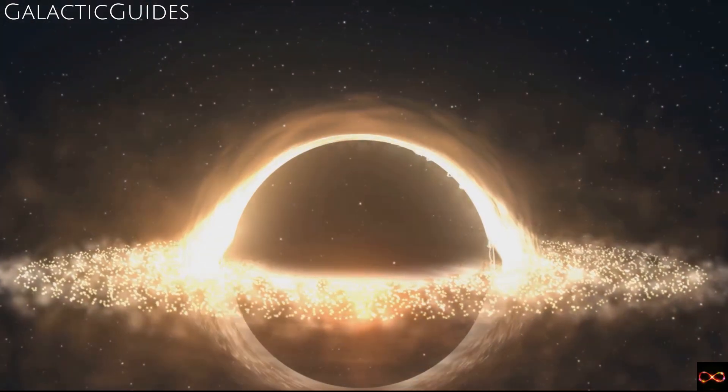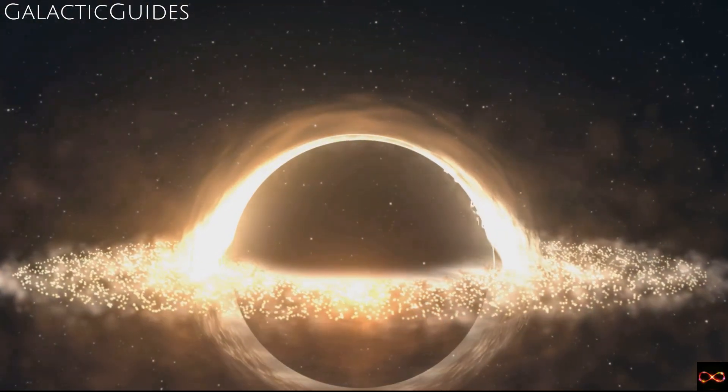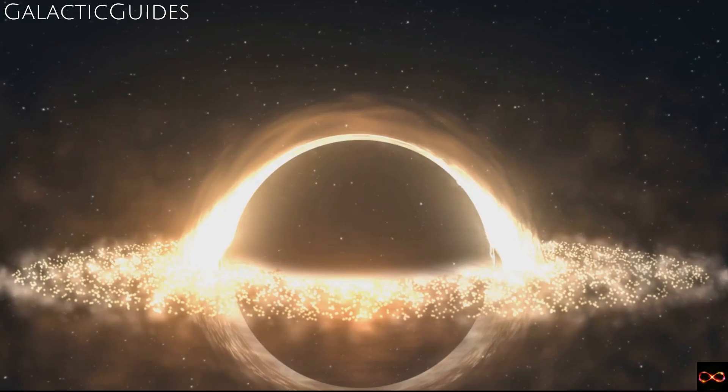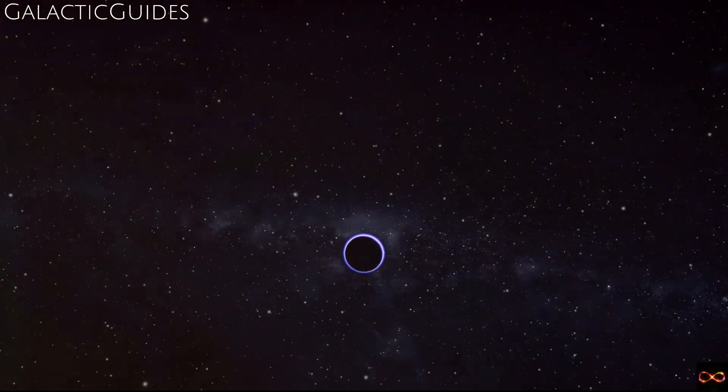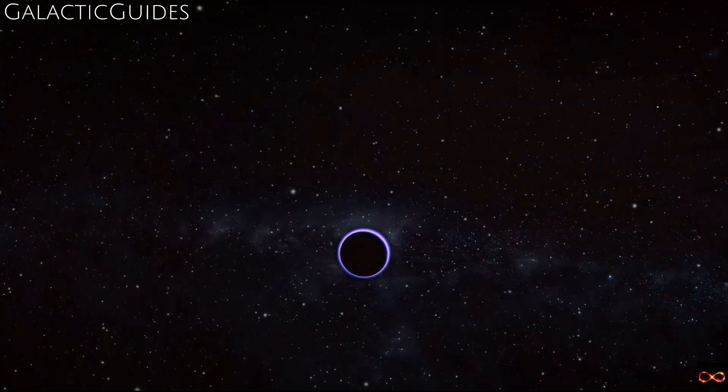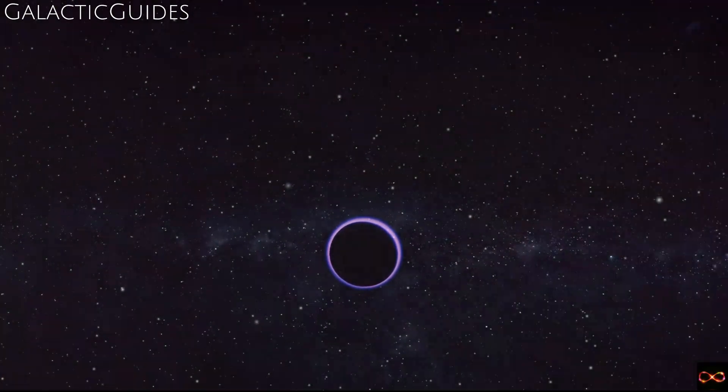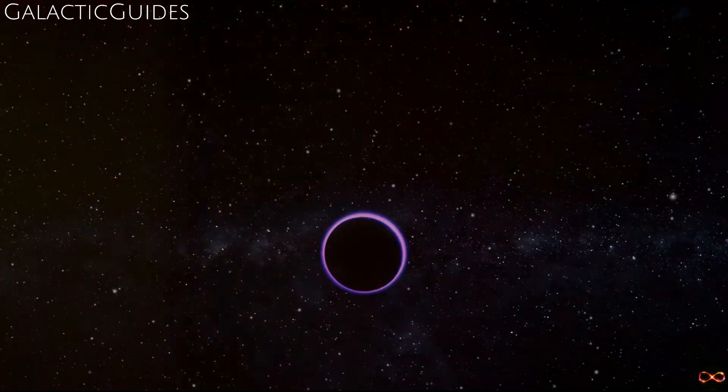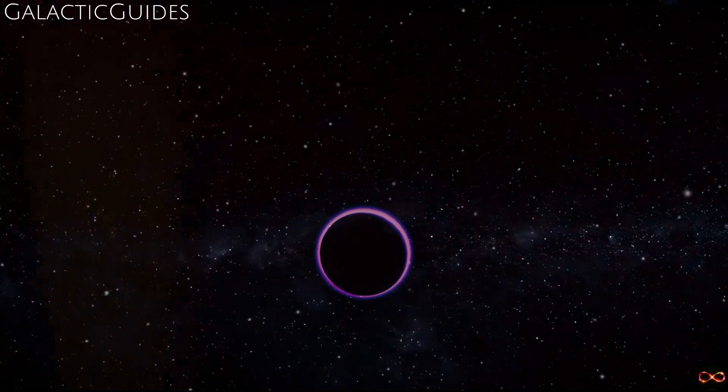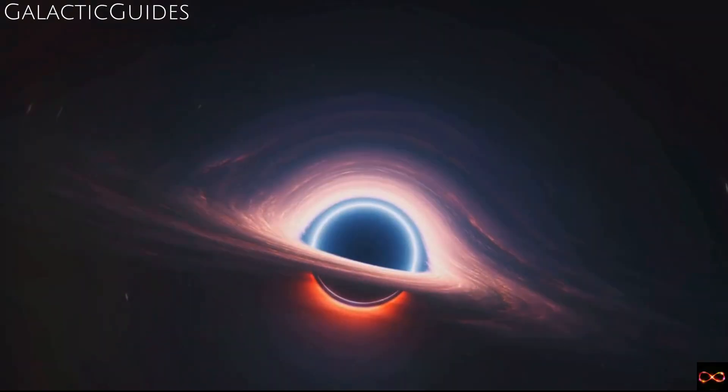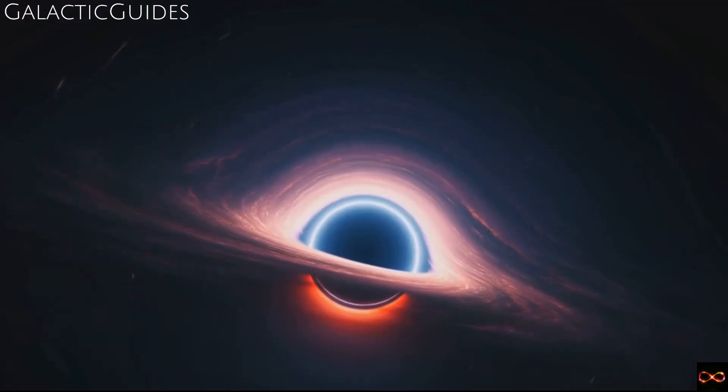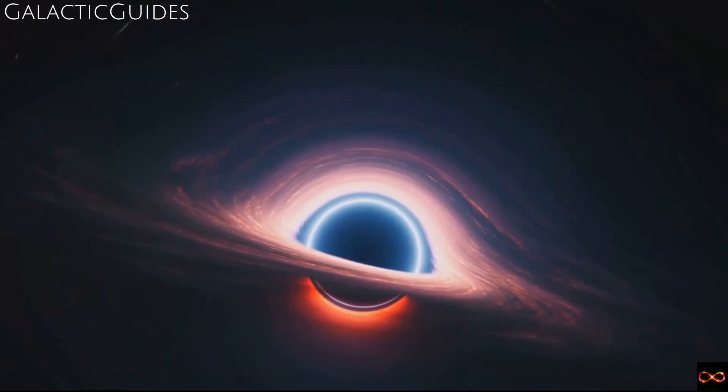It suggests that the universe censors singularities, hiding them from view by cloaking them within black holes. So what's inside a black hole? A boundary from which there's no return and a heart where the laws of physics break down and the universe as we know it ceases to exist. It's a place of ultimate mystery and fascination, a testament to the extremes that our universe can reach.